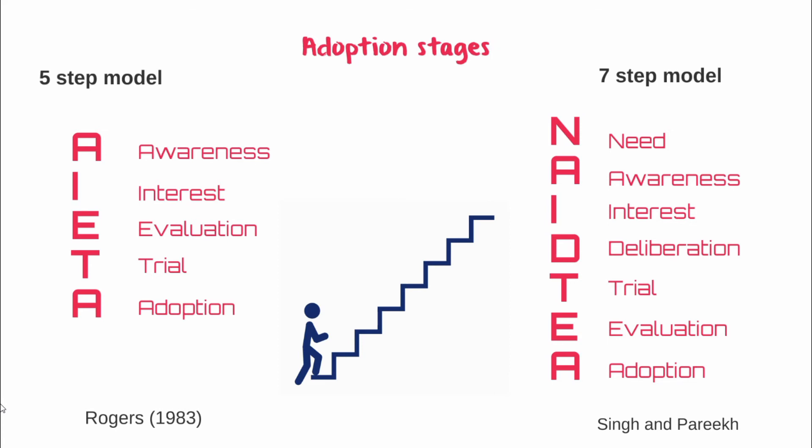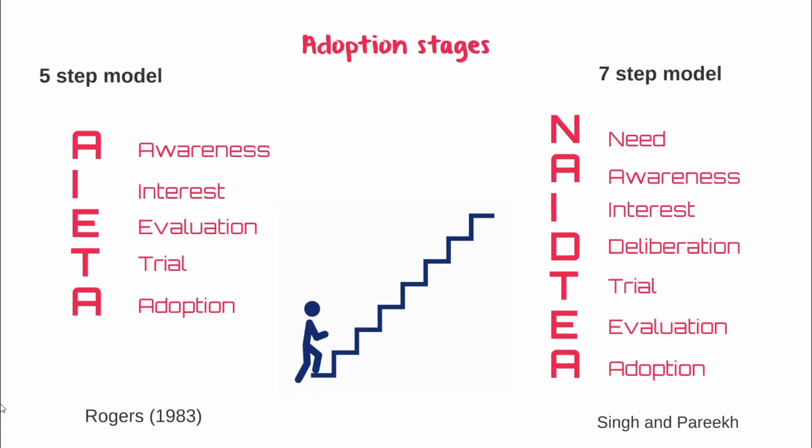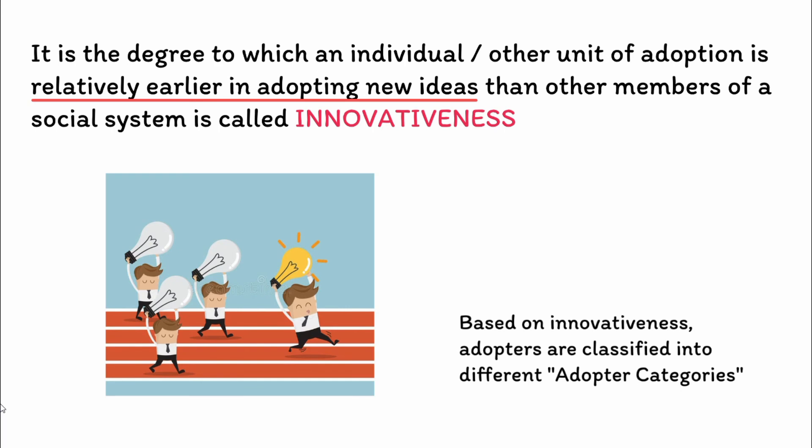If we consider the seven-step model of Singh and Parikh, it starts with the need stage, where the farmer is in great need of a technology or innovation to change his existing situation. Then he enters the awareness stage, where he knows an idea exists that can act as a solution to his problem. Then he enters the interest stage, where he gets more and more additional information and knowledge about that innovation. Then he mentally evaluates the innovation in his own condition in the deliberation stage, and practices it at a very small scale in the trial stage. Based on the results obtained in the trial stage, he evaluates the whole innovation to address his problem. Then finally, he adopts that particular innovation.